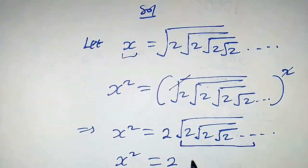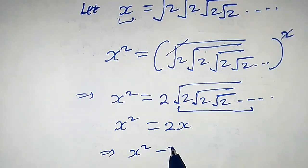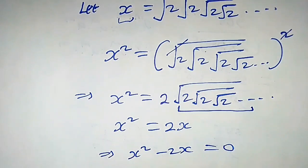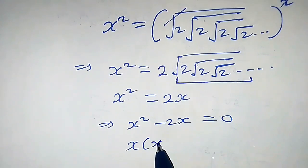We have x squared minus 2x equals 0. x is common, so let us pull it out. We're gonna have x into x minus 2 equals 0.